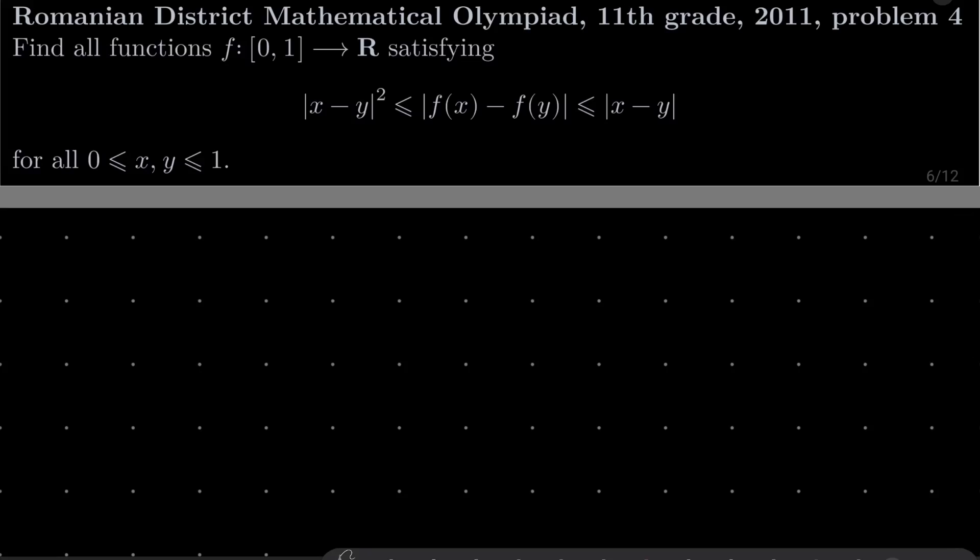Hello friends. In this video I'd like to solve the following problem from the Romanian District Mathematical Olympiad for 11th graders, 2011, problem number 4. We wish to find all functions f from the compact interval [0,1] into the set of real numbers, satisfying these two inequalities: the absolute value of (x minus y) squared, less than or equal the absolute value of f(x) minus f(y), and this is less than or equal the absolute value of x minus y, for all real numbers x and y between 0 and 1.